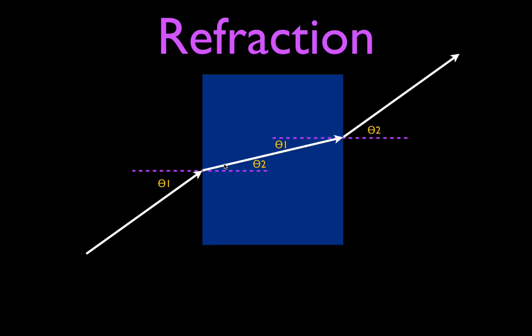Sometimes students ask how much should I bend it when I draw it towards or away from the normal line. For now, since we're not actually calculating the angles yet, just bend it so that it looks like it's bent — so that the angle of refraction looks either more or less than the angle of incidence. Make it look bent. Also, since this side of the prism is parallel to the other side, this exit ray should really be parallel to the incident ray.